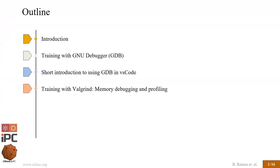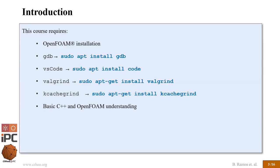For this course you're going to need a valid OpenFOAM installation, GDB as our main debugger, VS Code which I hope to convince you to use in place of Emacs or whatever text editor you're currently using, Valgrind for memory and code profiling, and the KCacheGrind utility for visualization of the output from Callgrind. You should also have a basic understanding of C++ and OpenFOAM coding.